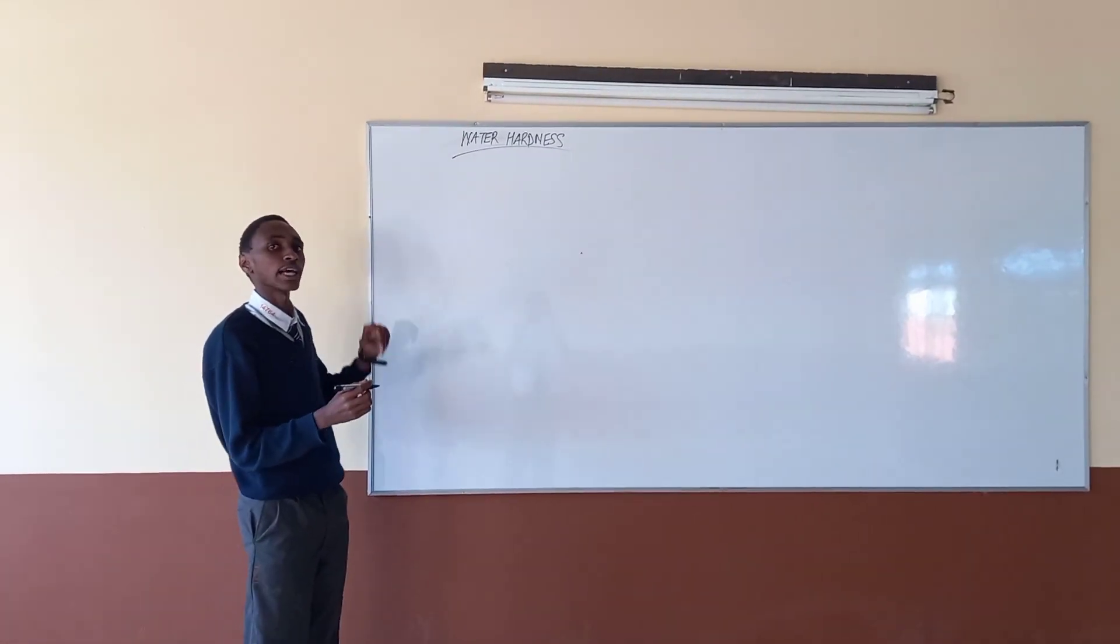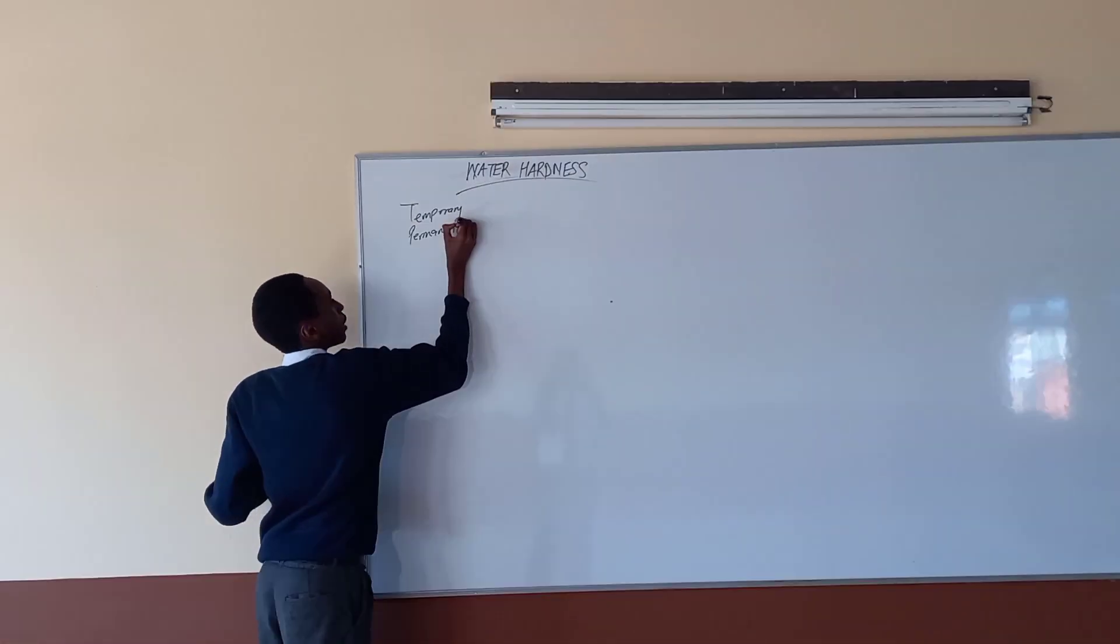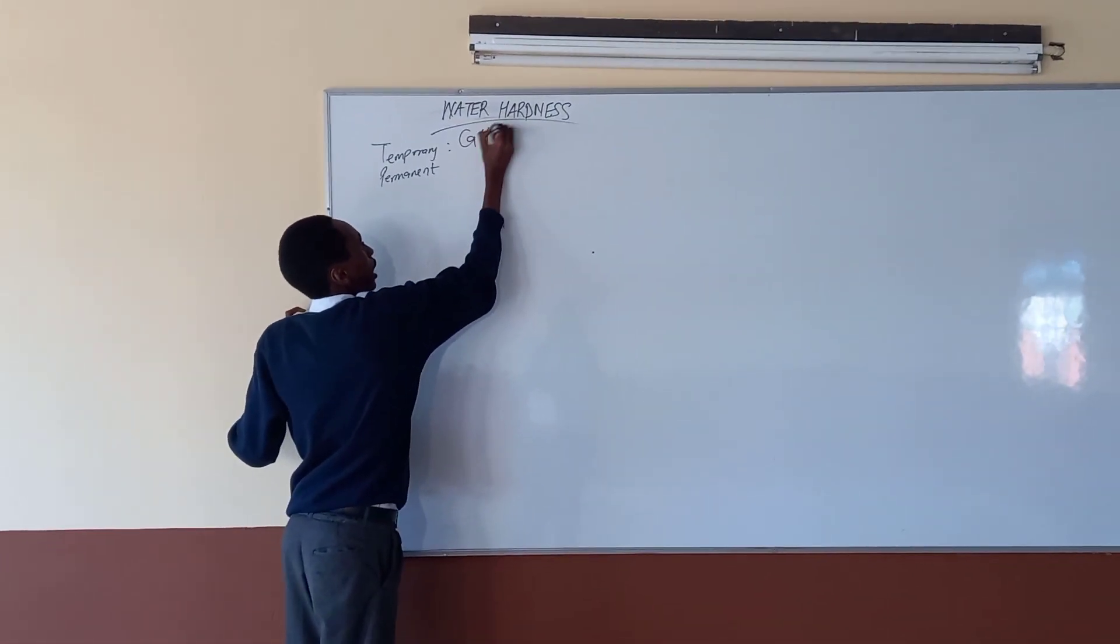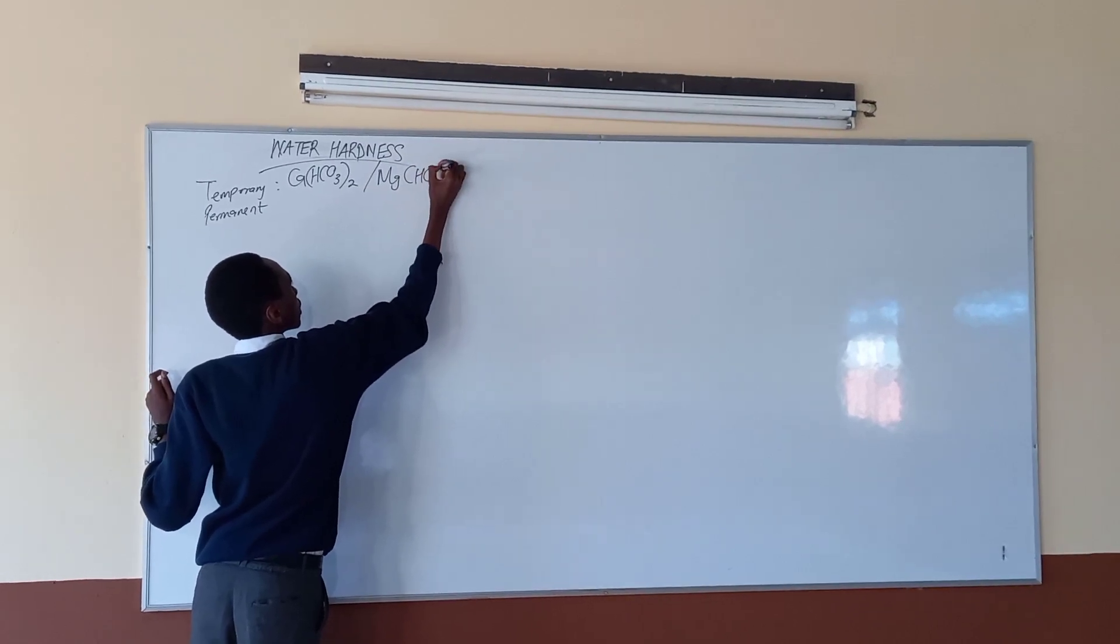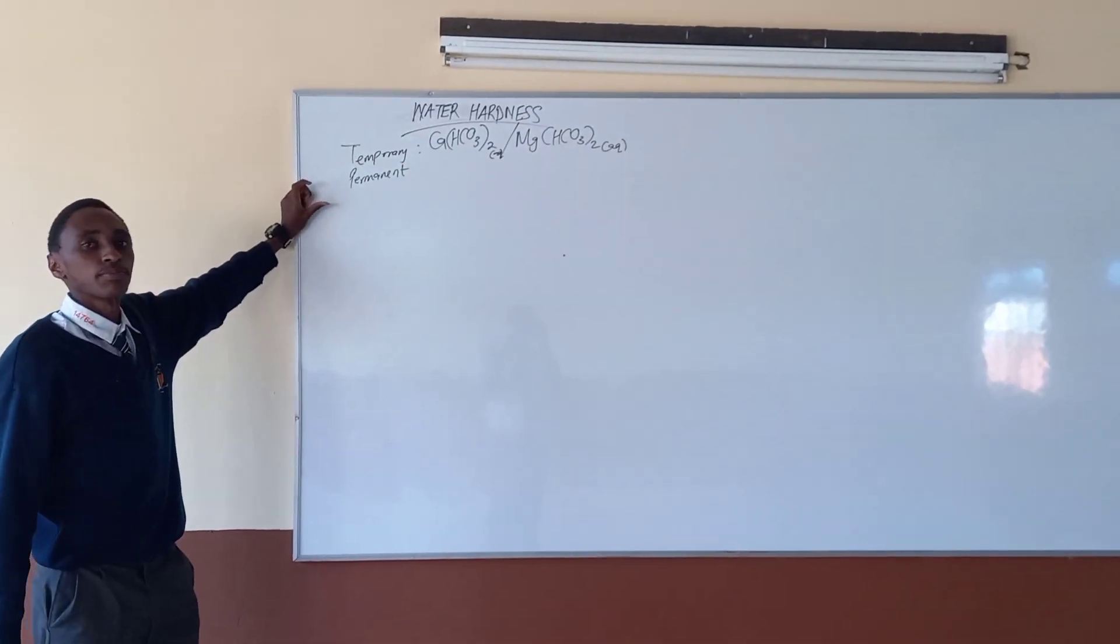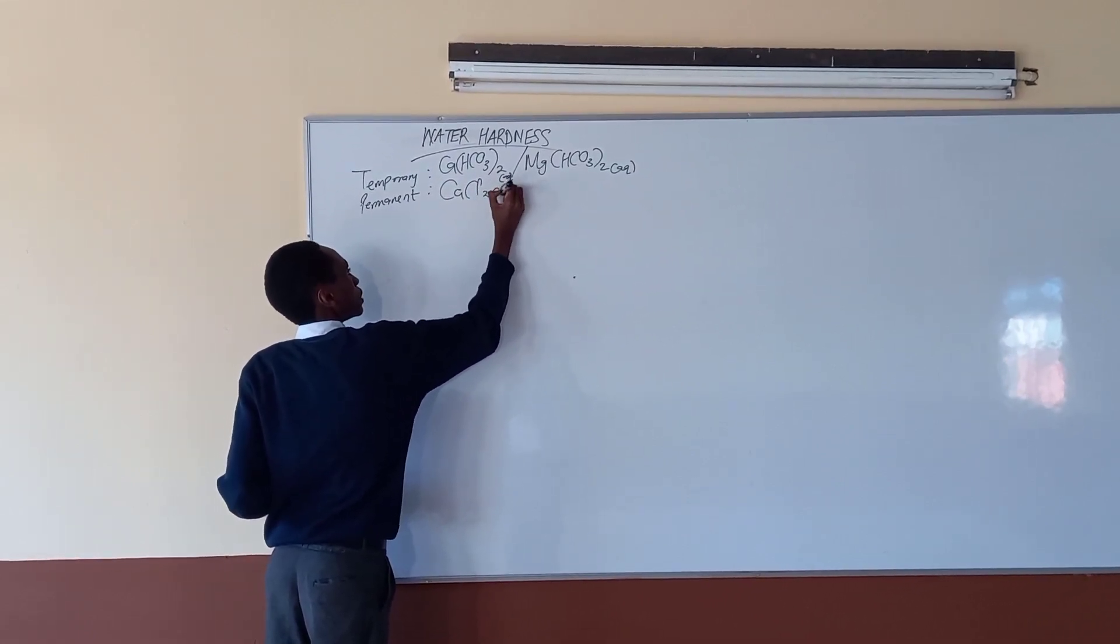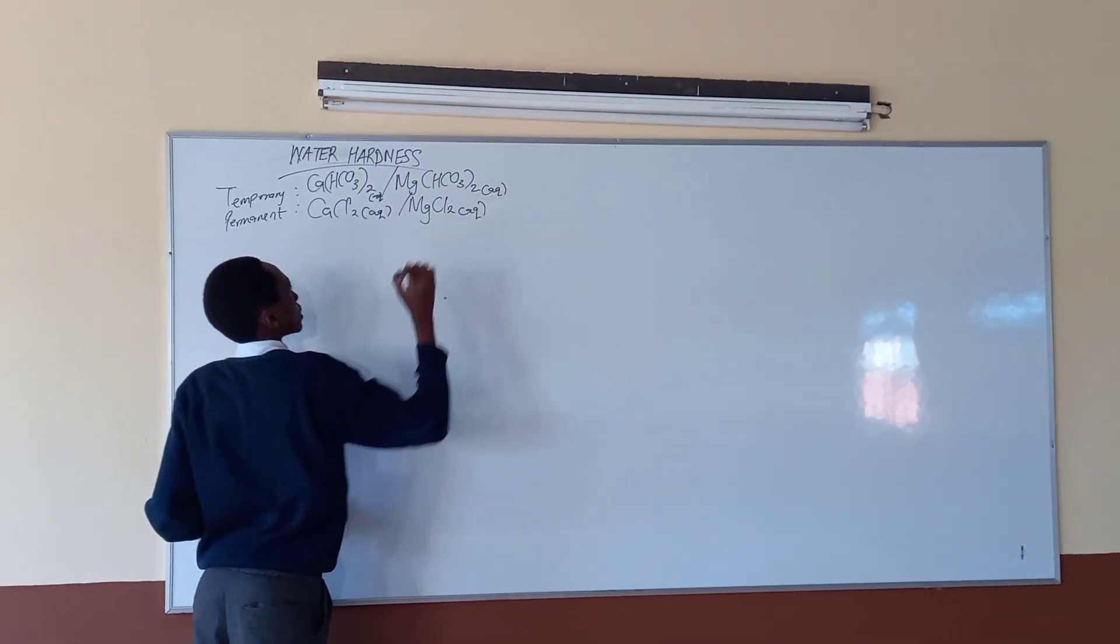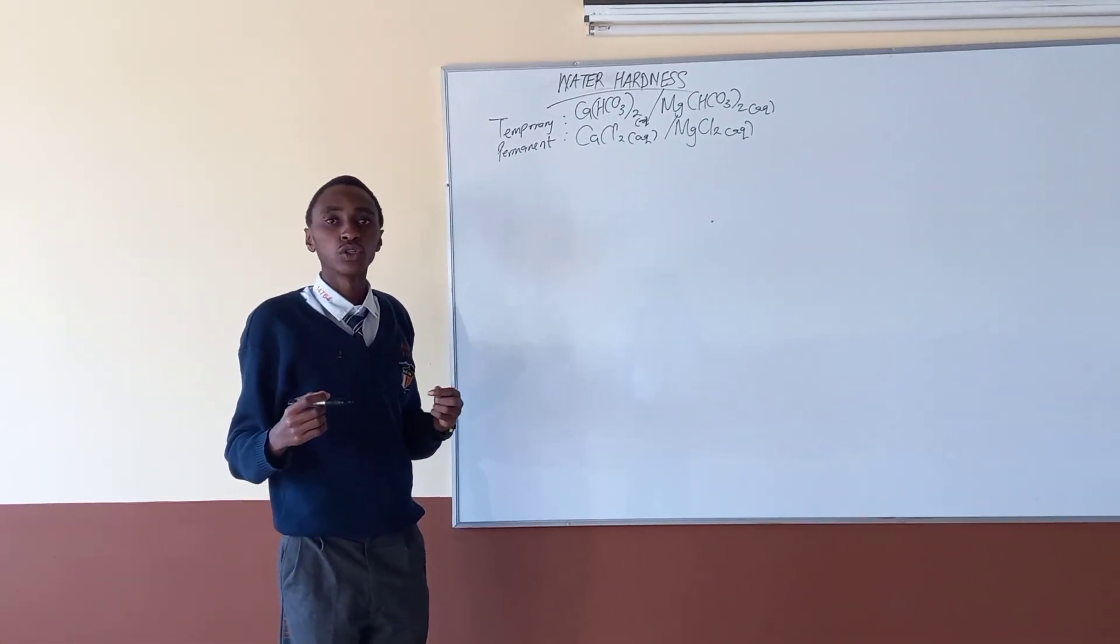Let's begin breaking this down. As for water hardness, we have temporary and permanent. Temporary water hardness is caused by dissolved calcium hydrogen carbonate or magnesium hydrogen carbonate, both in aqueous state. Then there is permanent water hardness, caused by either dissolved calcium chloride or dissolved magnesium chloride, which are also aqueous. Water hardness is about wastage in use of soap, and as a result, we have to remove it.